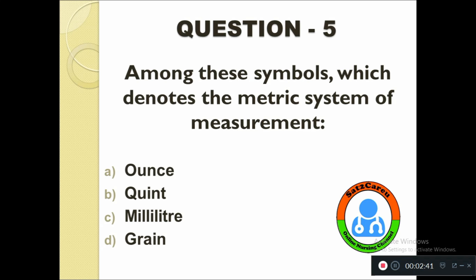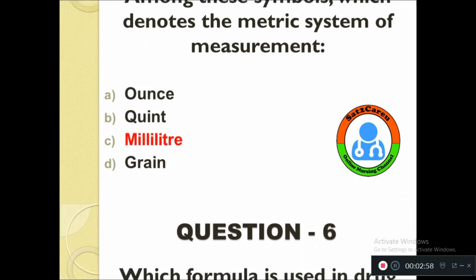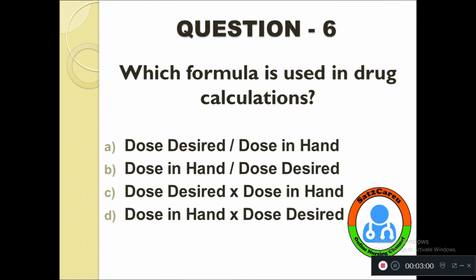Question number five: Among the symbols, which denotes the metric system of measurement? Option A, B, C: Milliliter, D: Grain. The correct answer is Milliliter.